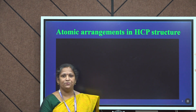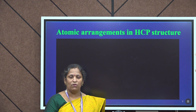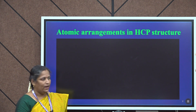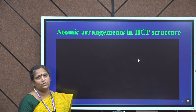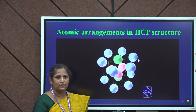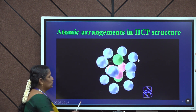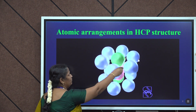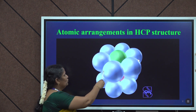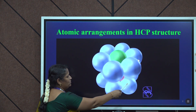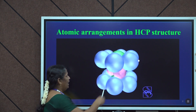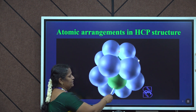Before starting our derivation, let us have a glimpse about how the atoms are arranged in a hexagonal closed pack structure. In a HCP structure, we have three categories of atoms: the corner atom, the base centered atom, and the middle layer atom. The corner atoms are represented by blue color, and there are six corner atoms in the top plane and six corner atoms in the bottom plane of the hexagonal lattice.